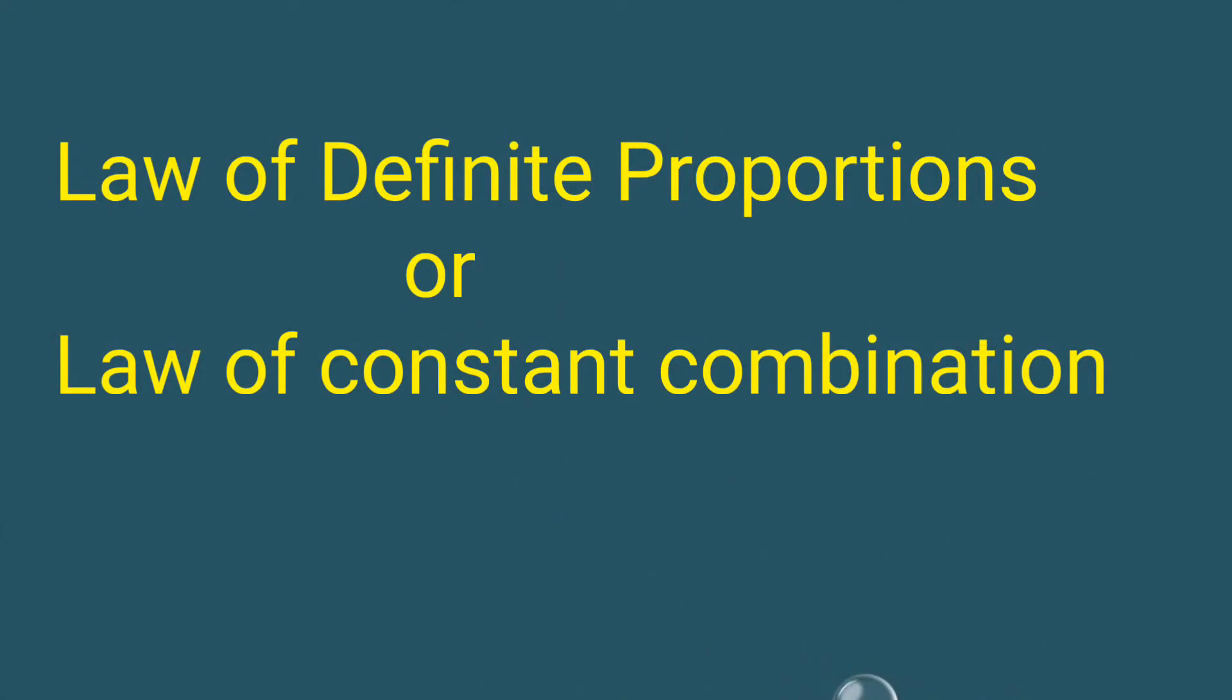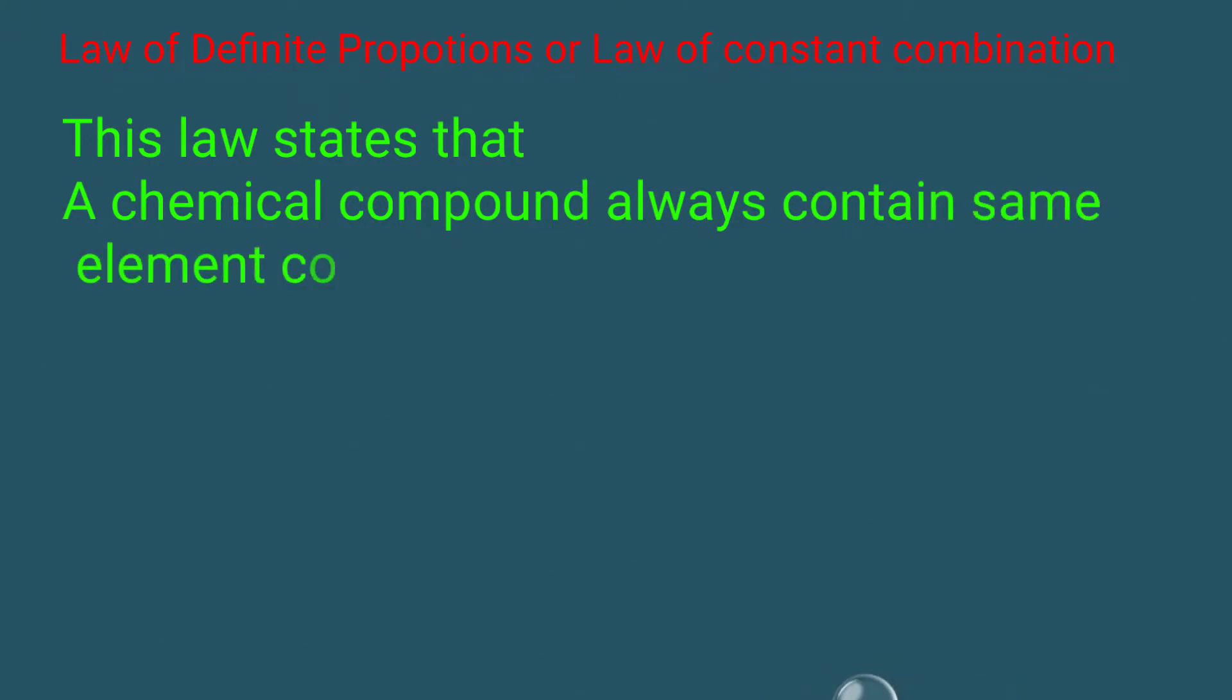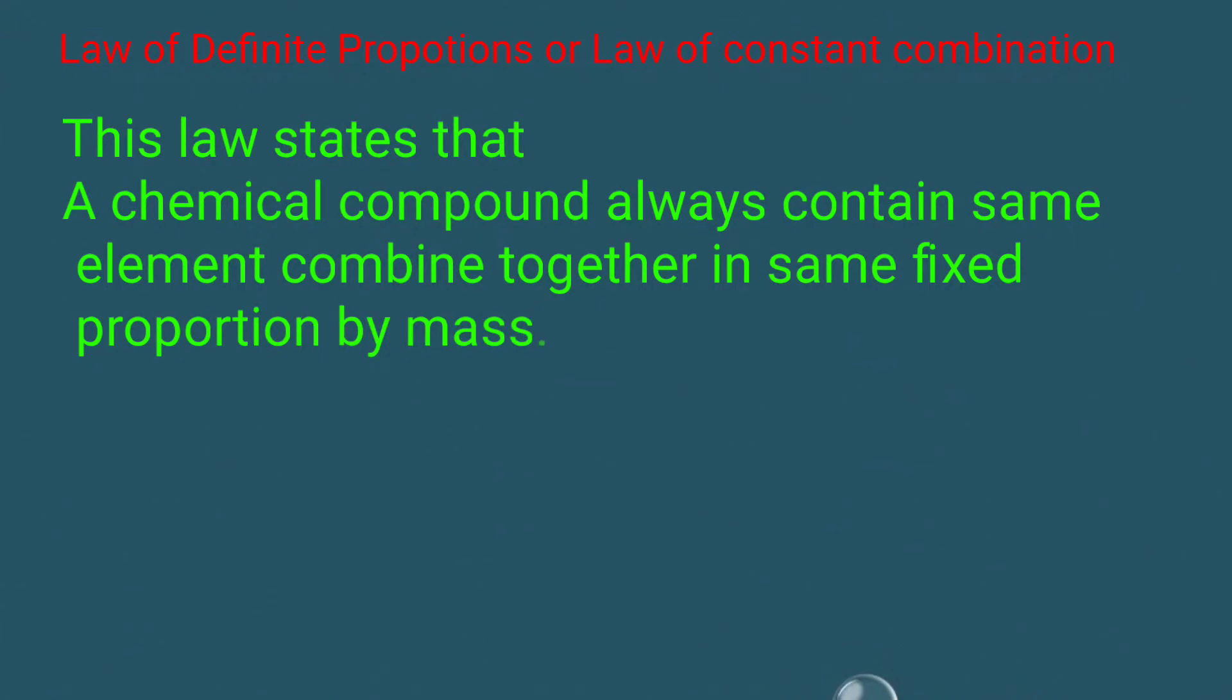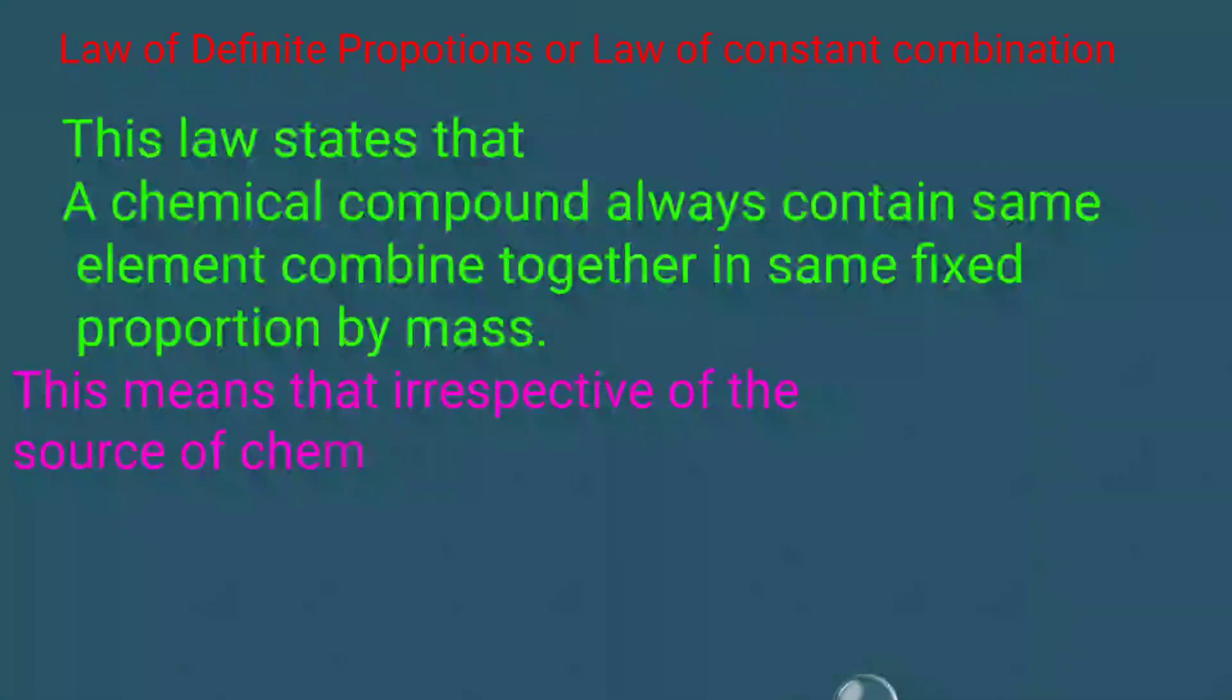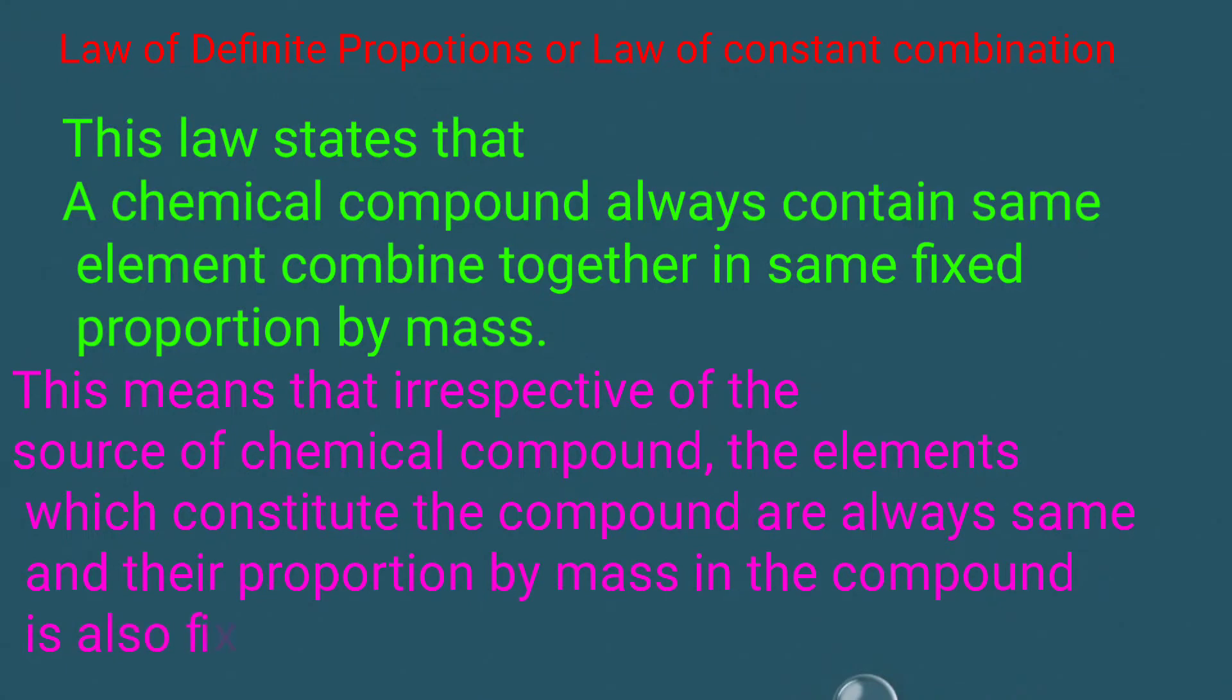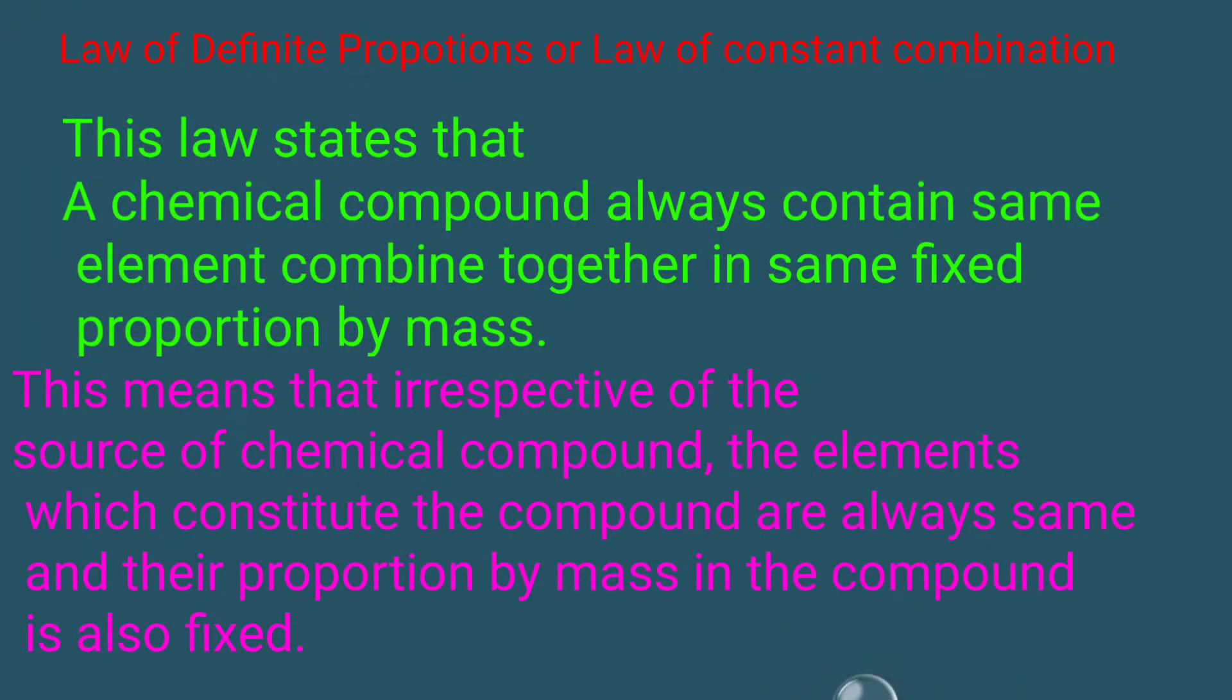Law of definite proportions or law of constant combination. This law states that a chemical compound always contains the same elements combined together in the same fixed proportion by mass. This means that irrespective of the source of a chemical compound, the elements which constitute the compound are always the same and their proportion by mass in the compound is always fixed.